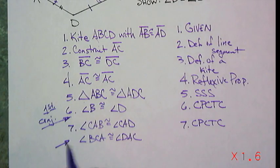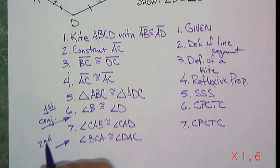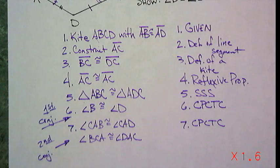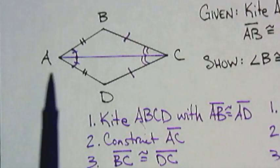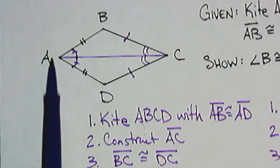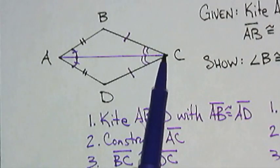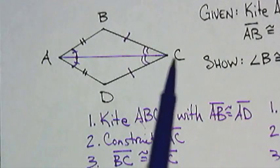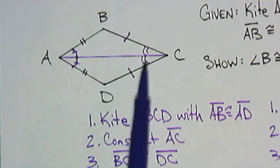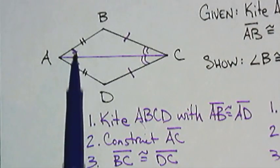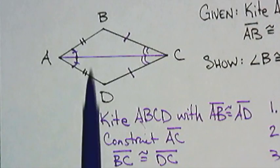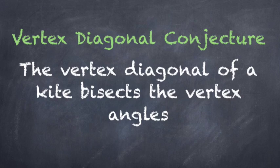This is my second conjecture for today. And all I need to do is put the math vocabulary. What is AC actually? It's connecting the vertex angles, and we call that the vertex diagonal. And what is the vertex diagonal doing? It is cutting each of these angles in half. We'll call it the vertex diagonal conjecture. The vertex diagonal of a kite bisects the vertex angles.